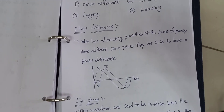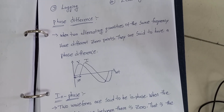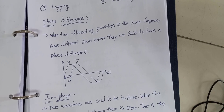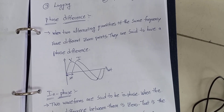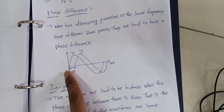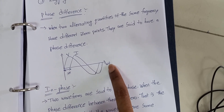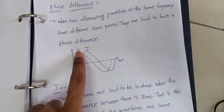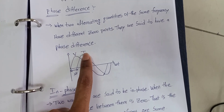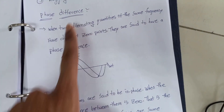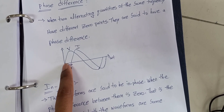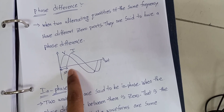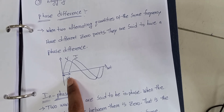Phase difference means: when two alternating quantities of the same frequency have different zero points, they are said to have a phase difference. Here we are going to take the x-axis as omega t and the y-axis as amplitude — either voltage amplitude or current amplitude. The phase difference is the angle between the starting point of the voltage source and the starting point of the current source.